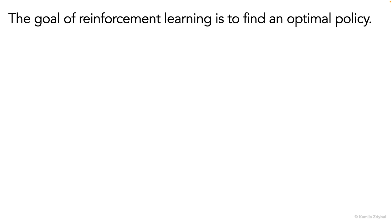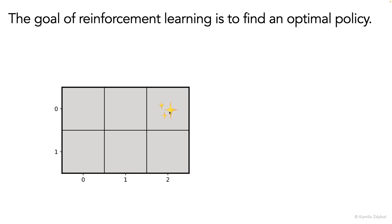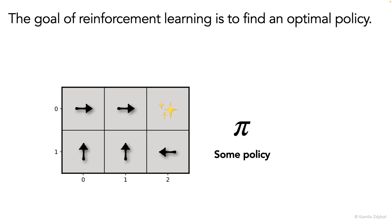So the goal of reinforcement learning now is to establish what we call an optimal policy — that is an optimal action to take at every possible state in the environment. And here's one example of a policy that tells the agent exactly which action to execute in each of the states. However, this is not an optimal policy.